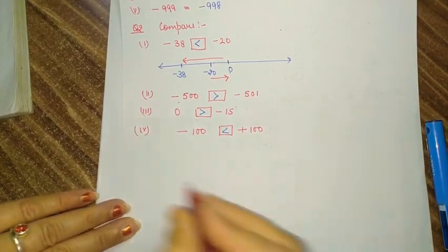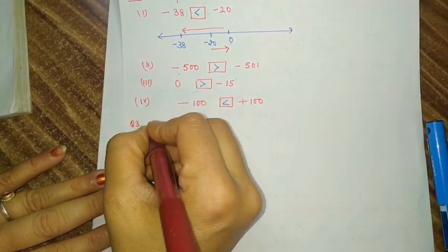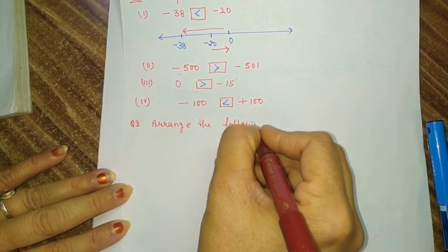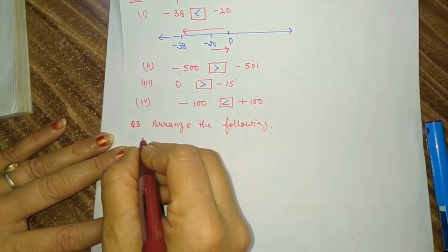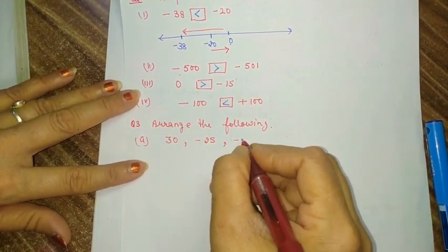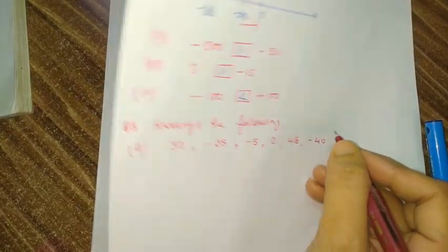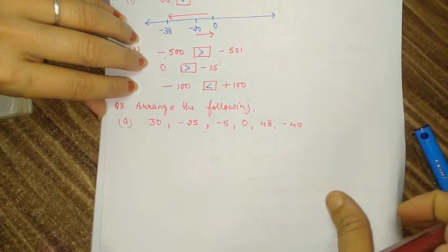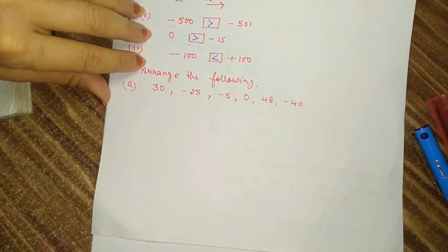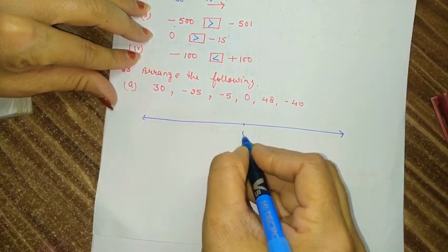Question number 3: we have to arrange all numbers in ascending and descending order. The given numbers are 30, minus 25, minus 5, 0, 48, and minus 40. If you represent this on a number line, it is very easy to arrange them in ascending or descending order. First draw a number line and represent all the numbers on it.